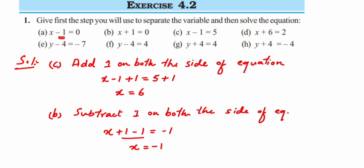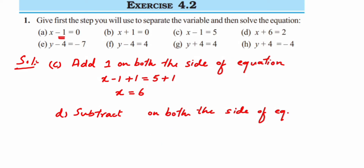Part (d): x plus 6 is equal to 2. We need to remove the 6 from the left-hand side, so we subtract 6 on both sides. x plus 6 minus 6 is equal to 2 minus 6. Plus 6 minus 6 becomes 0, so x is equal to minus 4.